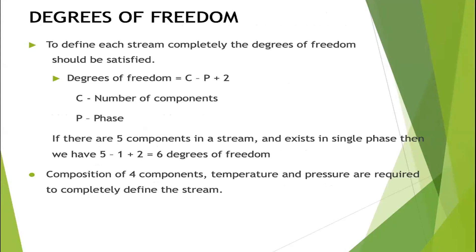Degrees of freedom are important for defining streams and unit operations. The general formula is C minus P plus 2, where C is the number of components and P is the number of phases. For example, if there are 5 components in a single liquid phase, you need 5 minus 1 plus 2 equals 6 degrees of freedom — which can be the compositions of 4 components plus temperature and pressure.